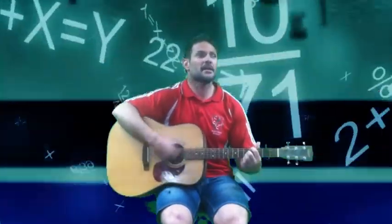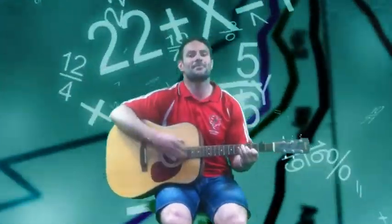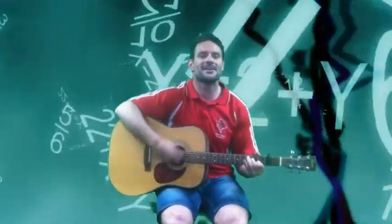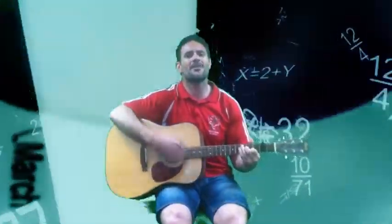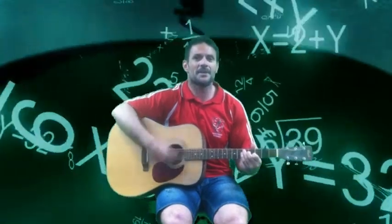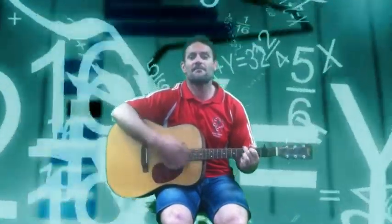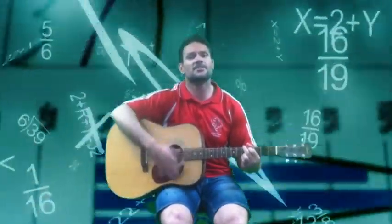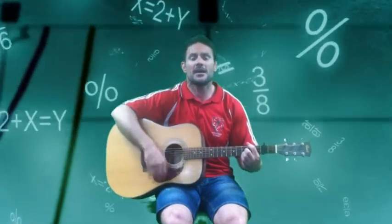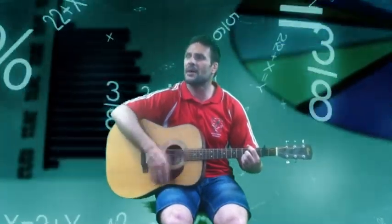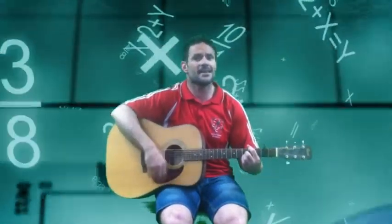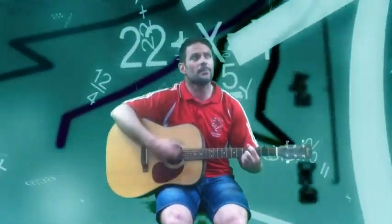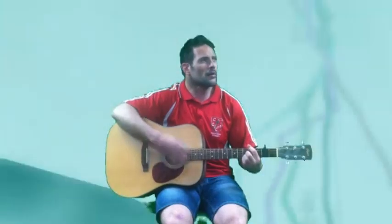Negative b plus or minus square root of b squared minus 4ac, all over 2a — that's the way. Mr. Bay — that's the name you see. The roots of a parabola tell us where the x-intercepts are.